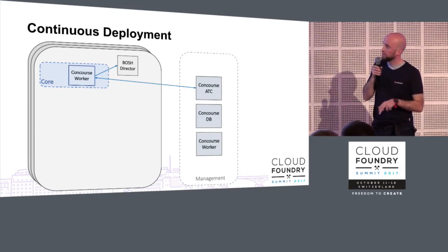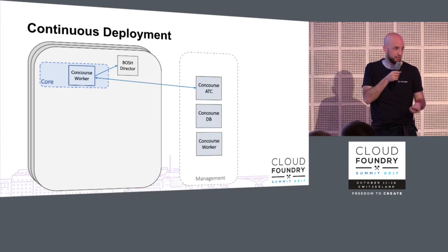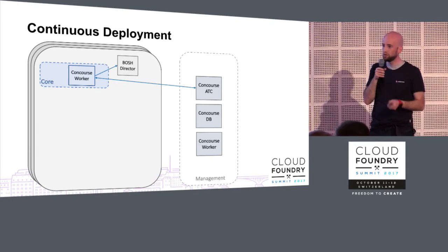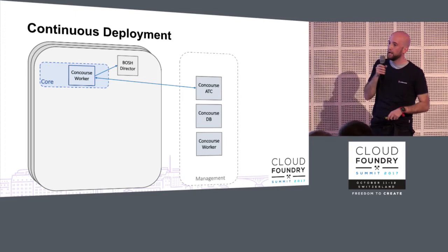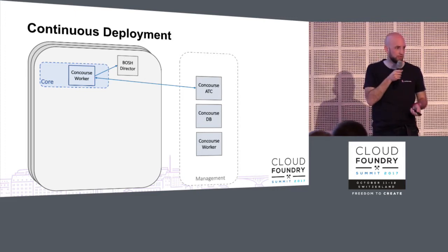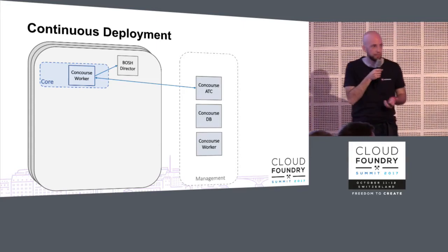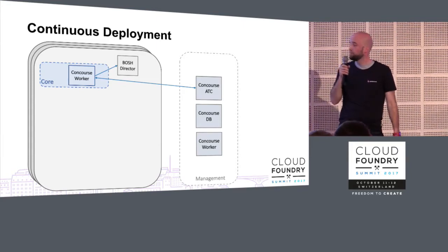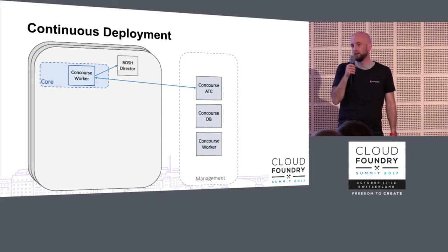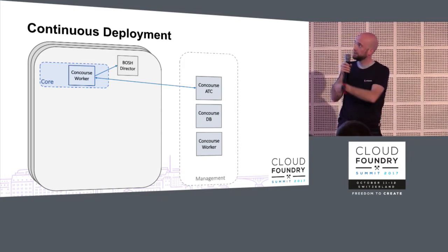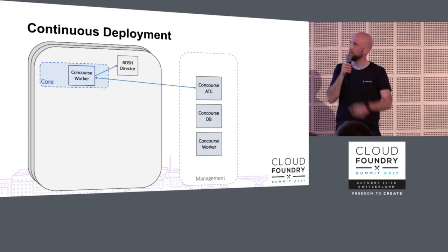In this central management plane we deploy a central Concourse ATC, the Concourse database, and some additional workers. All the workers on all the other environments are configured to talk back to that central ATC. The workers have been specifically tagged for the ATC to identify which environment or which customer they belong to. All our continuous delivery and continuous deployment pipelines are located in the central ATC.